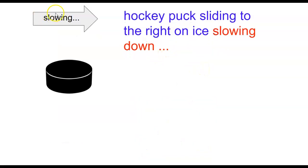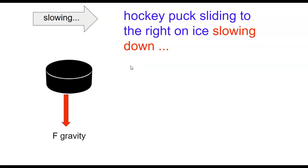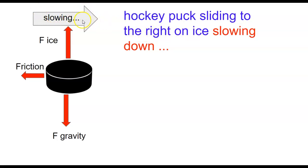All right, now look at this. We have a new motion contract: the puck moving to the right on the ice but slowing down — the declaration, slowing down. Now we can put our forces in. As you might imagine, we have the force of gravity down, the force of the ice up, and we have the force of friction backwards. The puck is moving to the right, our action indicator is to the right, but the only left-right forces are actually to the left.